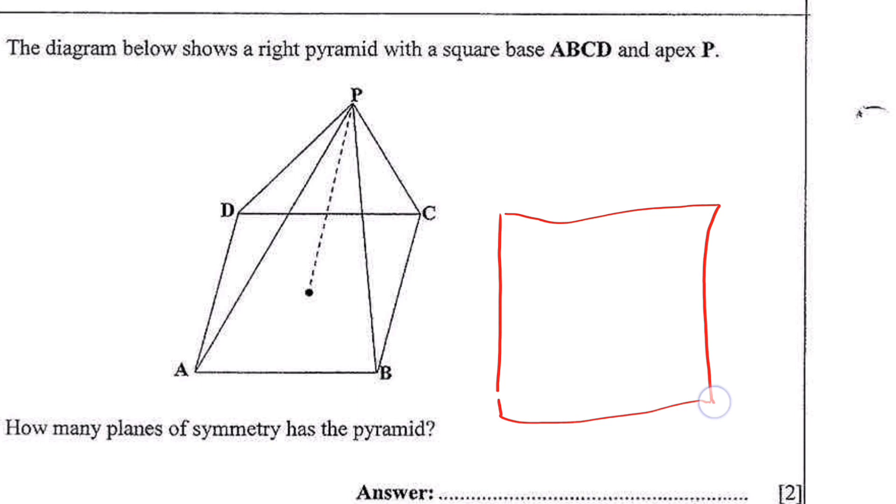A square is a polygon in which all the four sides are equal. So planes of symmetry...